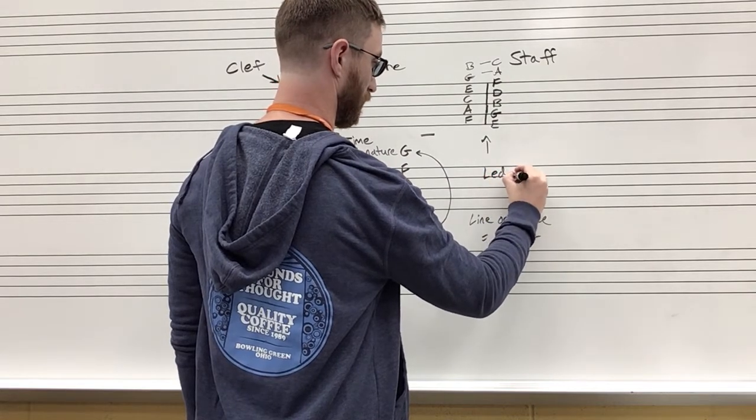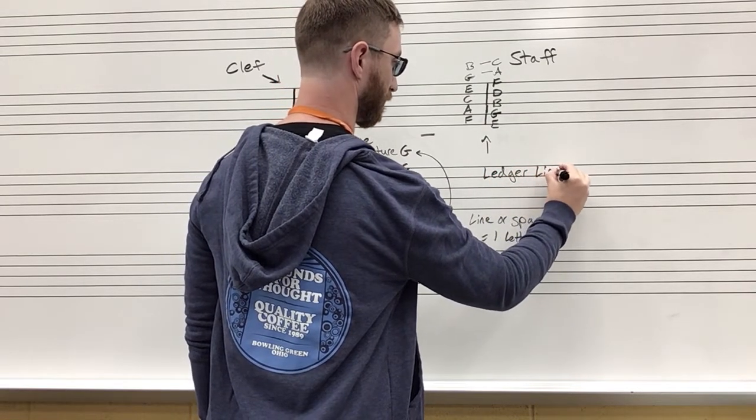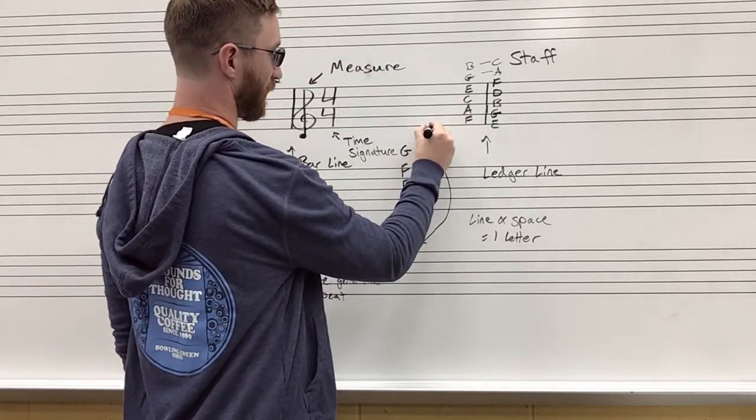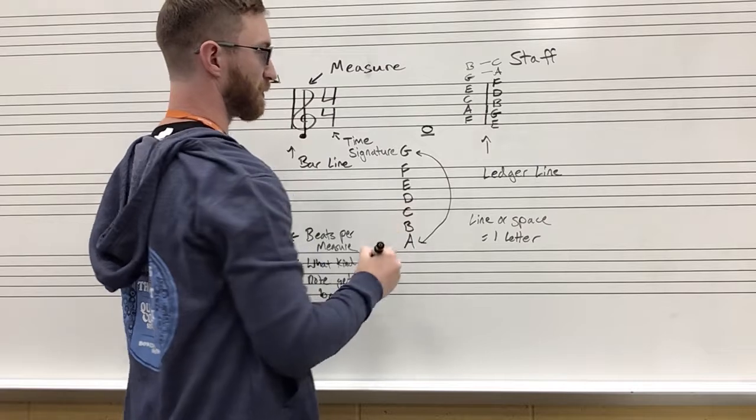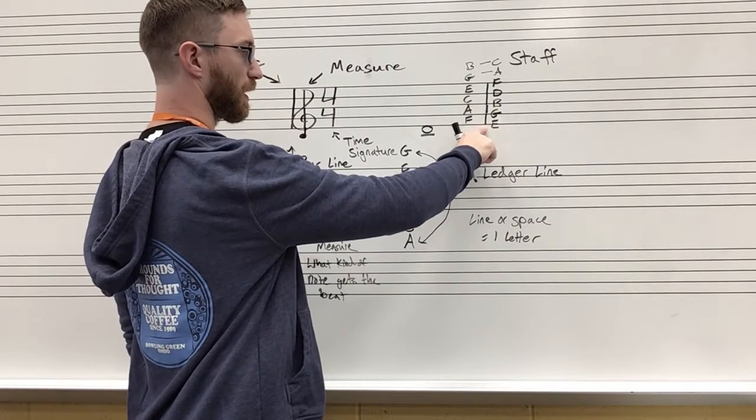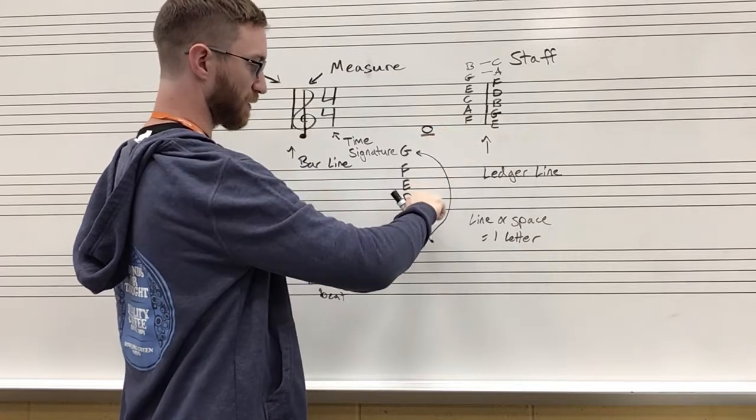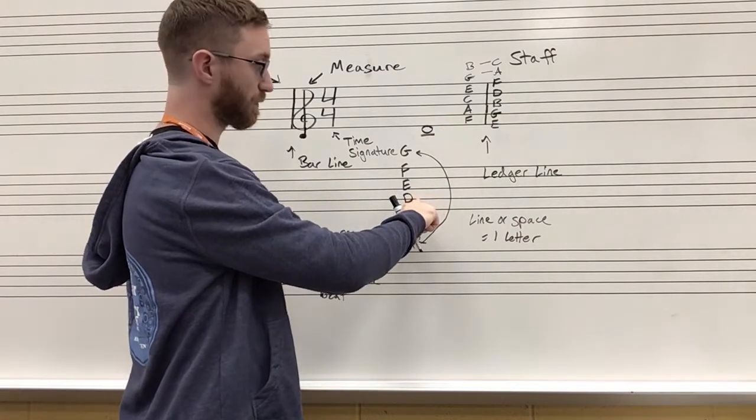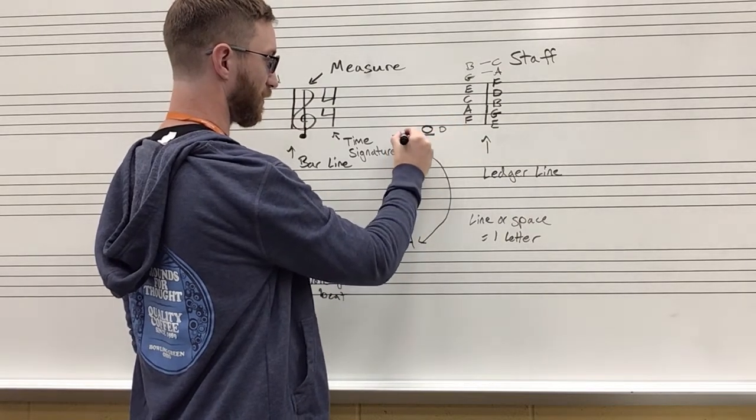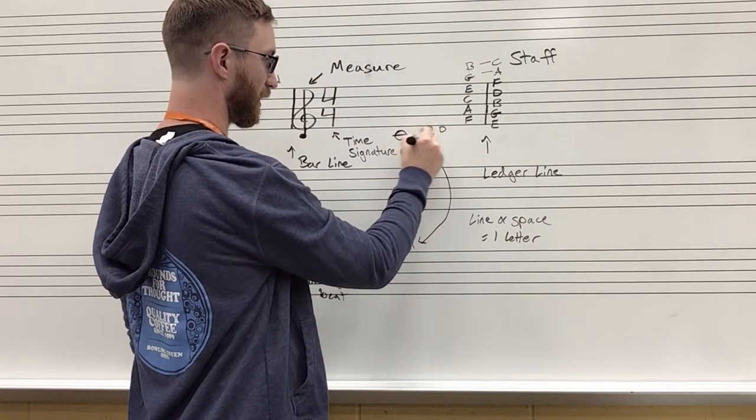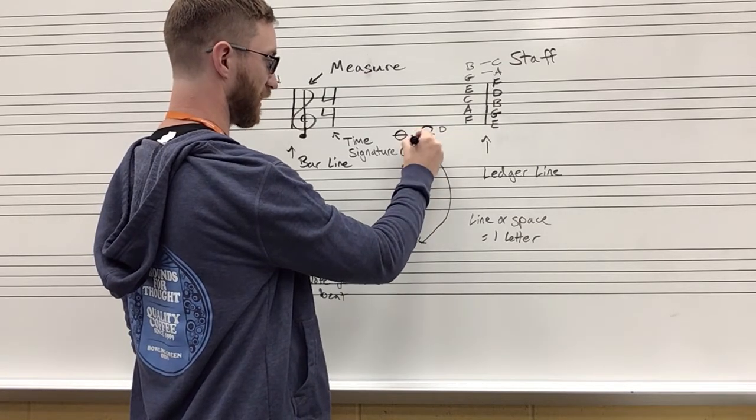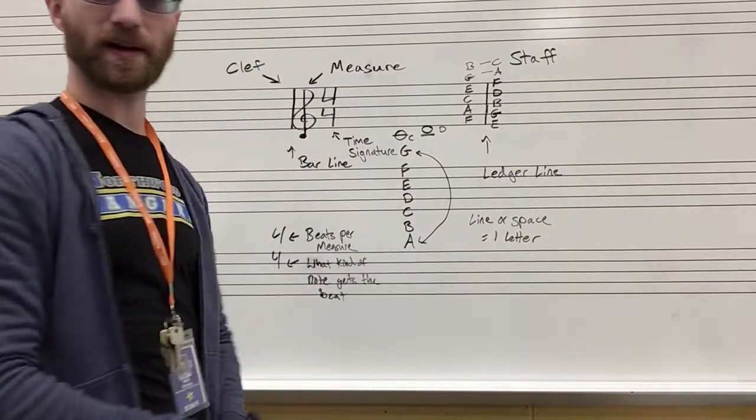So if I have a note here, it's below the staff. I know that the bottom line is E. I'm going to go down to the next note, D. So that is the note D. If I have another note on the line, I go then down one more note to the note C, and it would just keep going and going and going.